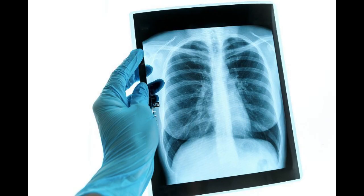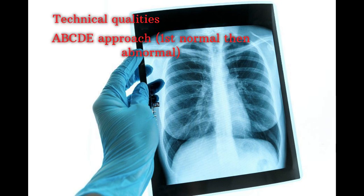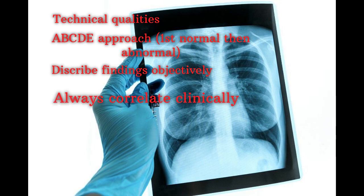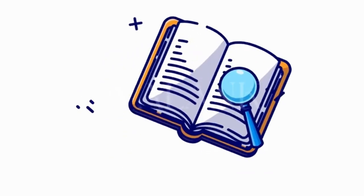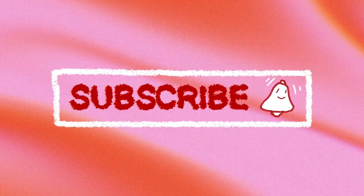Let's summarize. Always check technical quality first, then use the ABCDE approach — first on normal findings, then on abnormal. Describe findings objectively and then suggest likely causes. Always correlate with clinical context. If you stick to this method, you'll never be lost when interpreting a chest X-ray. Today we went from normal chest X-ray interpretation to identifying common abnormalities using a structured approach. If you found this video helpful, hit the like button, subscribe for more medical content, and share this with your colleagues.